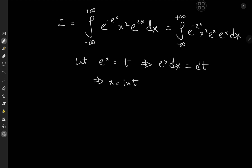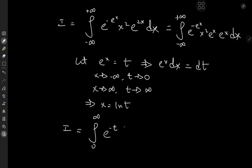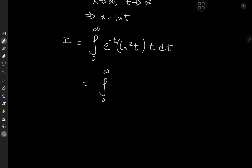This implies that x is equal to log t. We do have an x term over there. But for the limits of integration, we can just transform them using this equation. As x approaches negative infinity, e to the x approaches zero. And as x approaches infinity, t approaches positive infinity. So I is now the integral from zero to infinity of e to the minus t times log squared t times t dt. We've got t, e to the minus t, and log squared t.